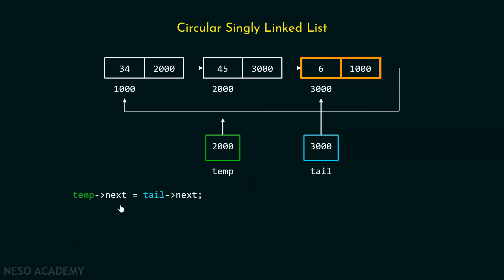After this, temp->next must be updated by tail->next. That is, the next part of this node must be updated by tail->next — that is, this address 1000. This replacement is important because after deleting this node, the second last node of this list must become the last node of this list, and that is why it must be updated by the address 1000.